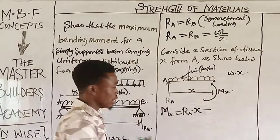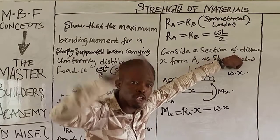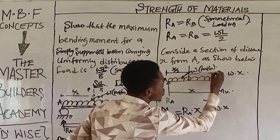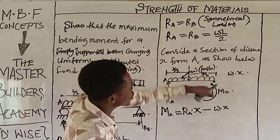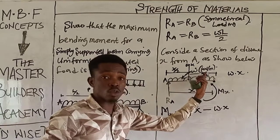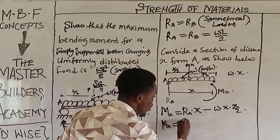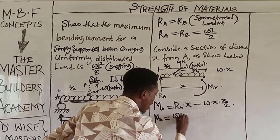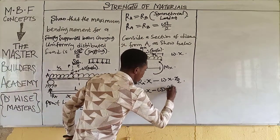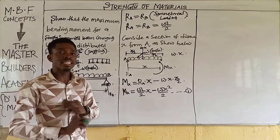When you convert the UDL to a point load W·X, that point load acts at the center of distance X, which is X/2 from the cut section. So the moment due to loading is W·X multiplied by X/2. Therefore: M_X = (WL/2)·X − W·X²/2. This is the moment equation for a simply supported beam carrying a UDL — call it Equation 1.